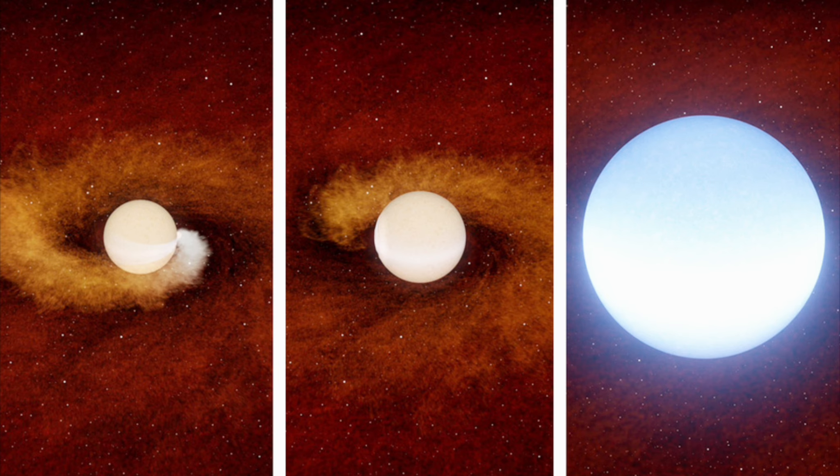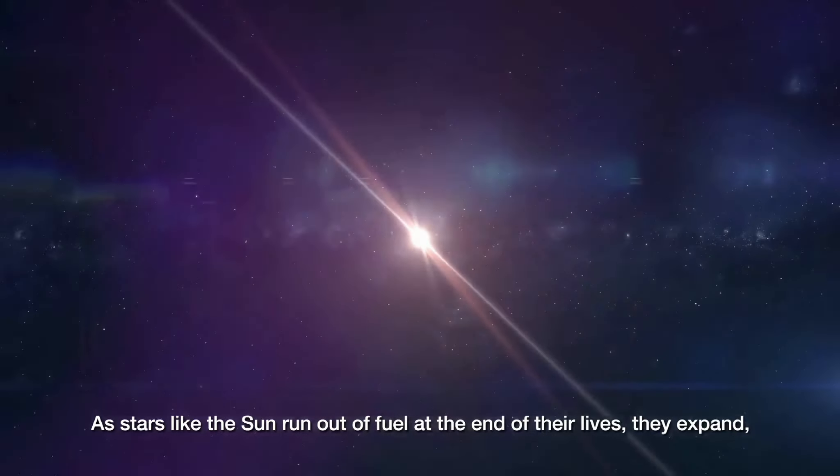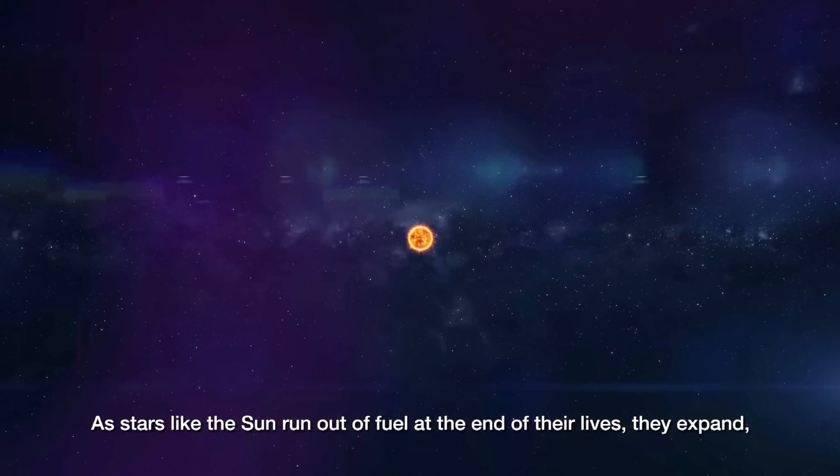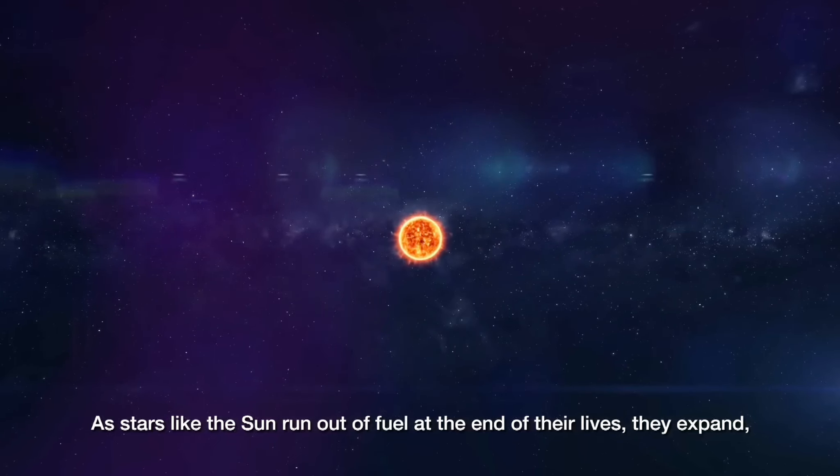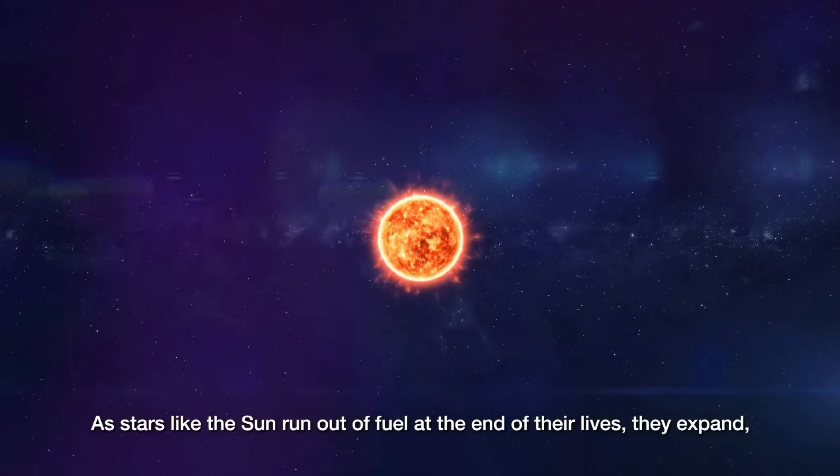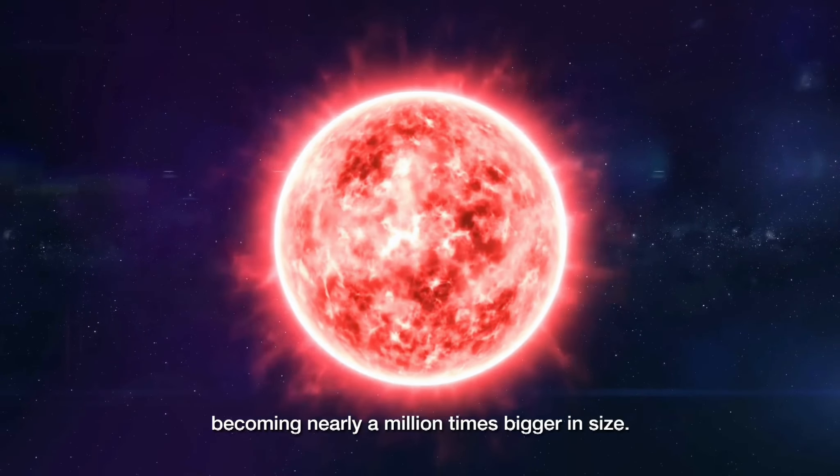The eventual demise of Earth, after the sun first engulfs Mercury and Venus, will probably proceed much like this. But the Earth is so much smaller that its engulfment would generate less light and be even less of a perturbation for the aging sun. But some theorists think the Earth won't be a stellar snack.